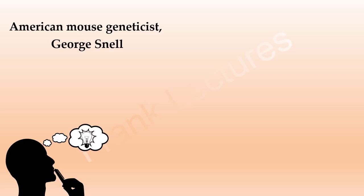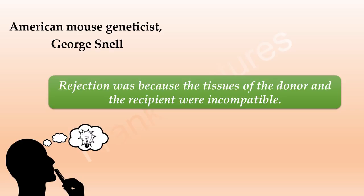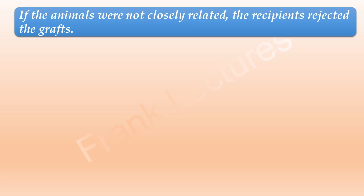George Snell gave the reason that this rejection was because the tissues of the donor and the recipient were incompatible. In other words, it was discovered that if the animals were not closely related, the recipients rejected the grafts.